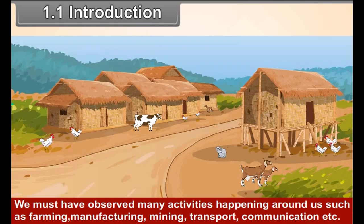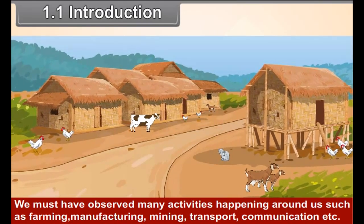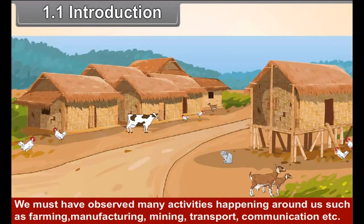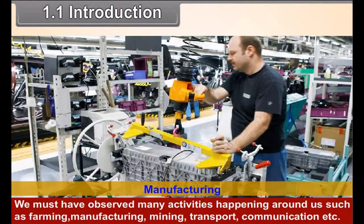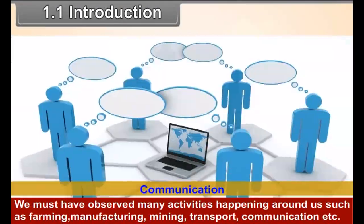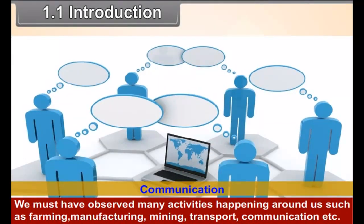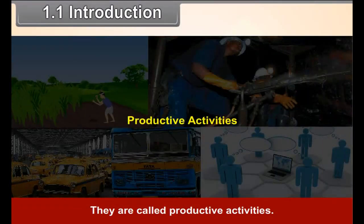1.1 Introduction. We must have observed many activities happening around us, such as farming, manufacturing, mining, transport, communication, etc. They are called productive activities.